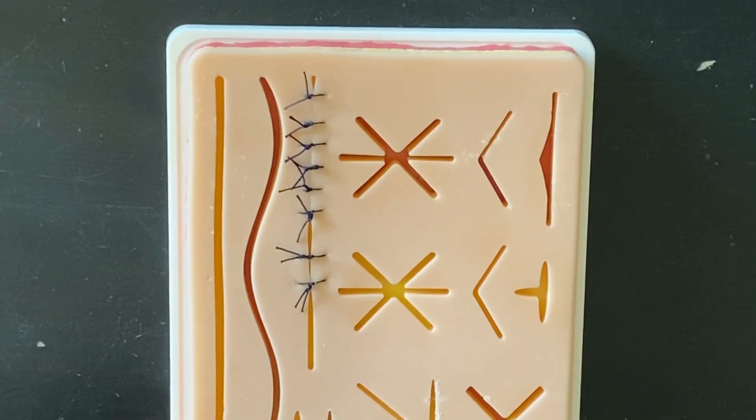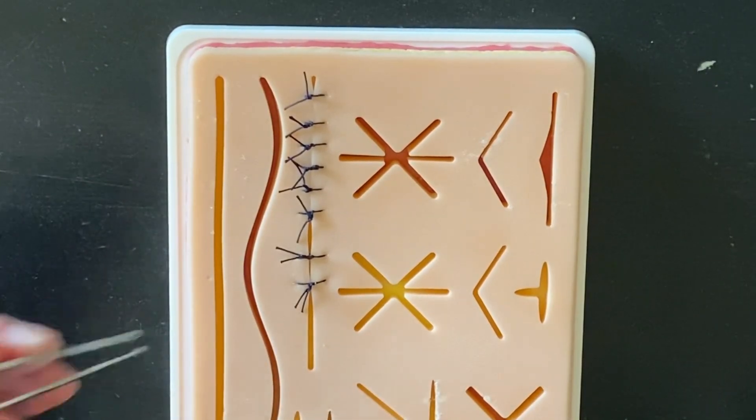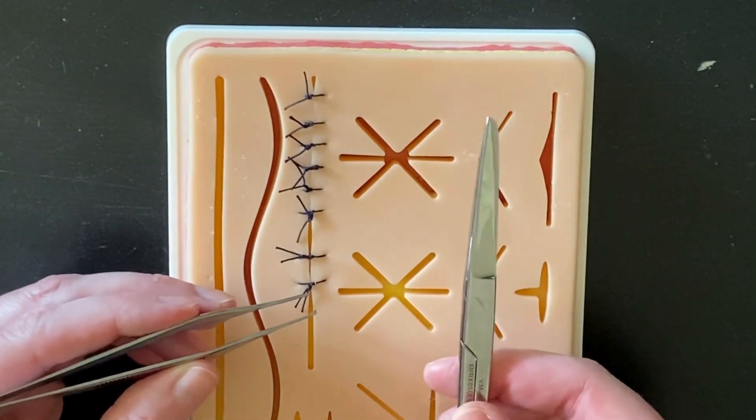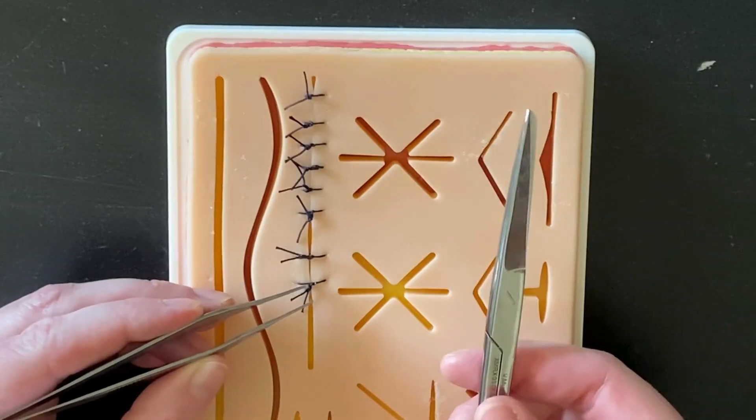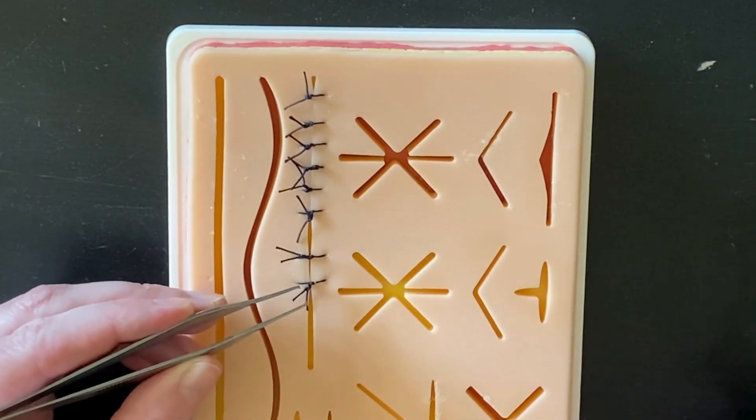Another lesson in removing sutures. Typically we're going to use an Adson and suture scissors to remove sutures. You might use an iris scissors if they're very fine sutures.